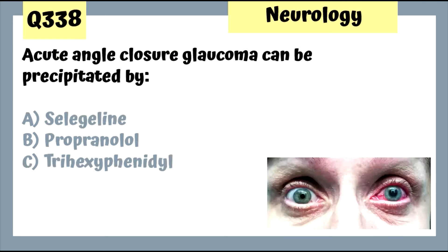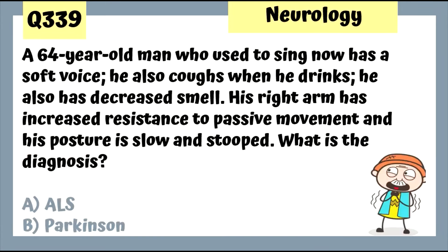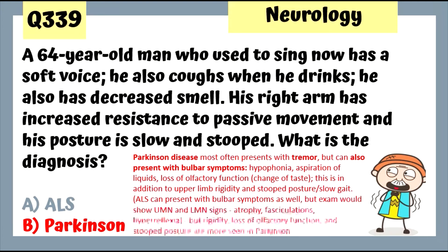Question 338: Acute angle closure glaucoma can be precipitated by an anticholinergic drug due to pupil dilation; it can also be triggered by walking into a dark room. Question 339: A 64-year-old man who used to sing now has a soft voice — this is Parkinson's disease presenting with bulbar symptoms. Decreased smell distinguishes it from ALS, which does not affect smell or sensation.